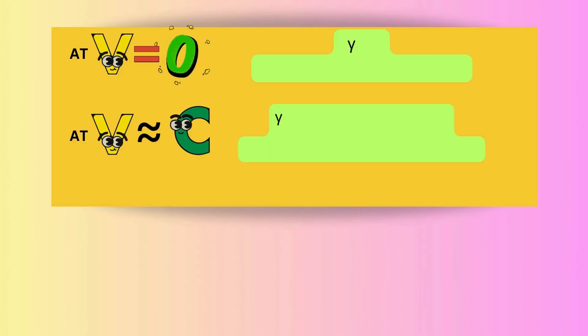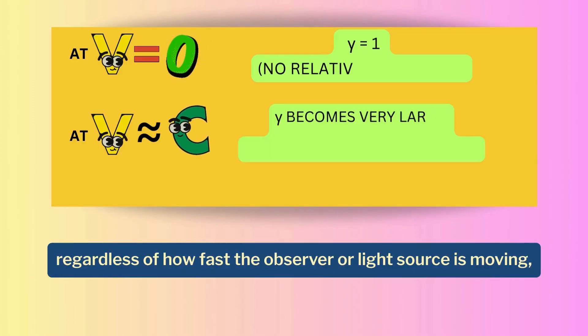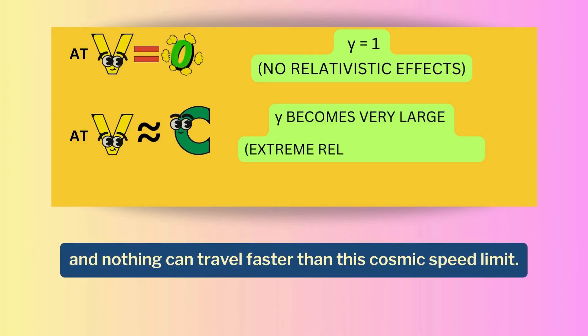The speed of light is constant, regardless of how fast the observer or light source is moving, and nothing can travel faster than this cosmic speed limit.